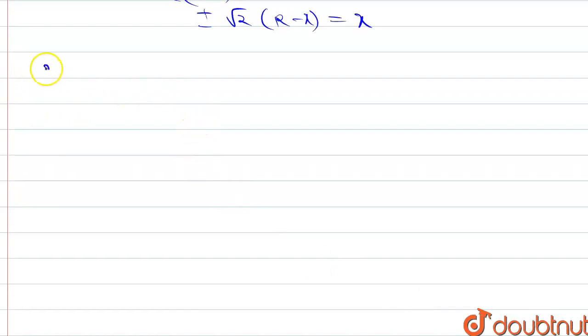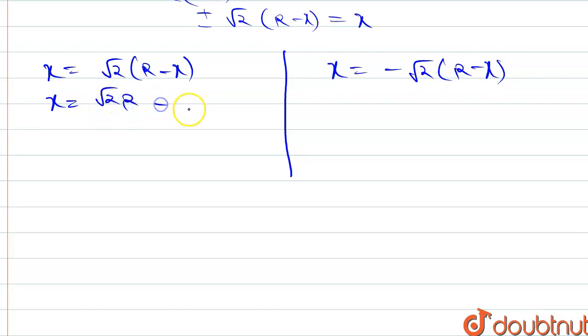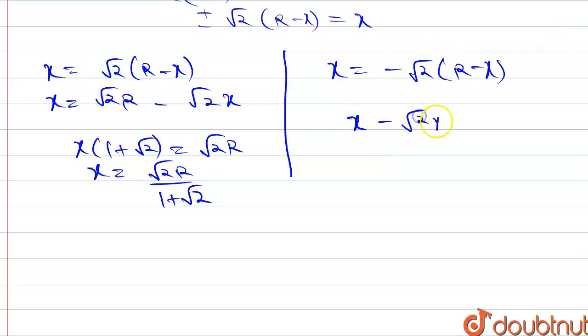First is x equals root 2 r minus root 2 x, and the second is x equals minus root 2 r plus root 2 x. From the first, x times (1 plus root 2) equals root 2 r, so x equals root 2 r over (1 plus root 2).